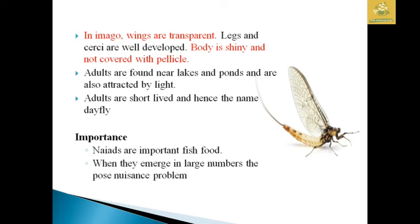In the imago the wings are transparent, legs and cerci are fully developed, and the body is shiny and not covered with the pedicel. In nymphs the body is covered with pedicel, while adults are not. Adults are found near lakes and ponds, attracted by light, and are short-lived, hence the name Dayfly. They are important as fish food, and when they emerge in large numbers they cause nuisance problems.